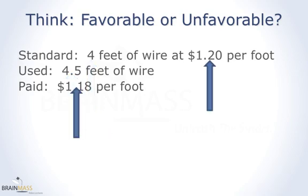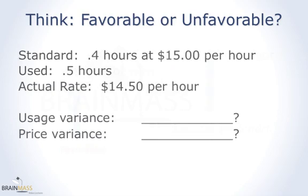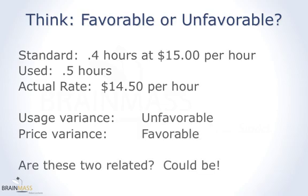We should have paid $1.20; we paid $1.18 — we paid less. That's favorable. Now you try: quantity/usage variance favorable or unfavorable, and price variance favorable or unfavorable? The usage variance was unfavorable because we used more than allowed, but the rate was less than allowed, so the price variance was favorable.